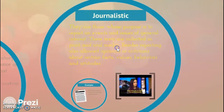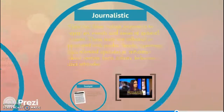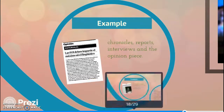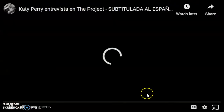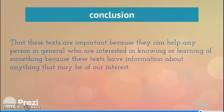Journalistic texts are those whose purpose is to report evidence on events and issues of general interest. These texts are collected in print and oral media; besides reporting, they also allow opinions or criticism about certain facts, values, behaviors, and attitudes. Here's an example of that: chronicles, reports, interviews, and an opinion piece. We have all seen interviews online, and that's just an example of one. These texts are important because they can help any person who is interested in knowing or learning something, as these texts have information about anything that may be of our interest.